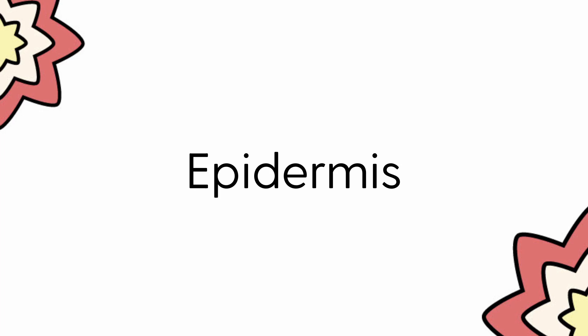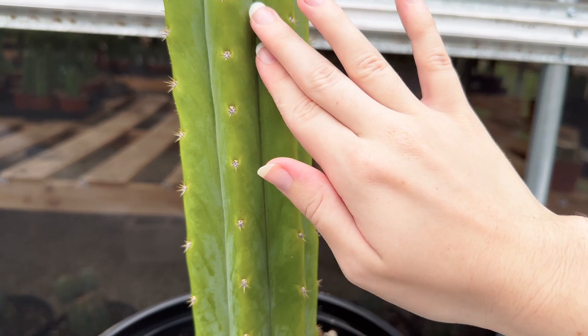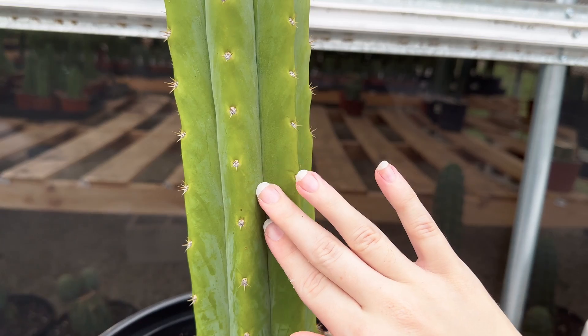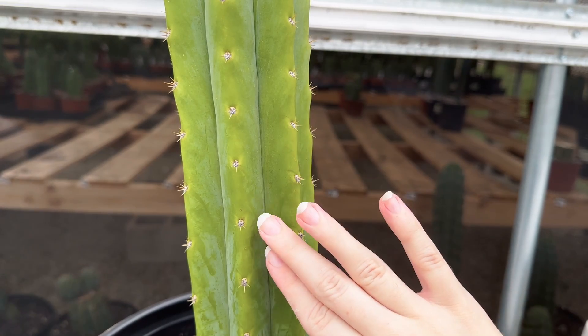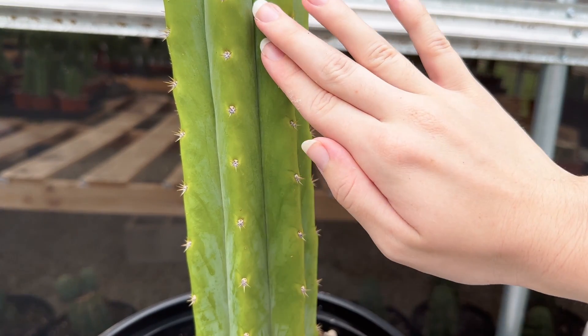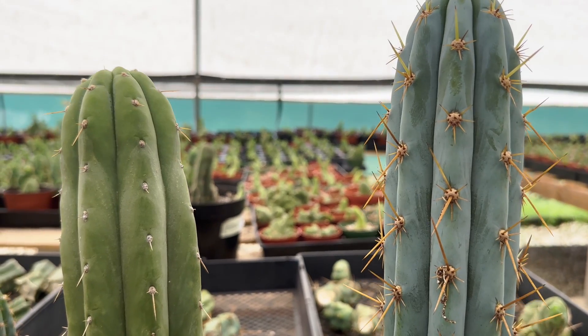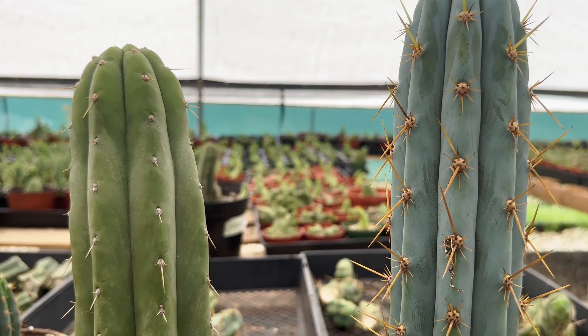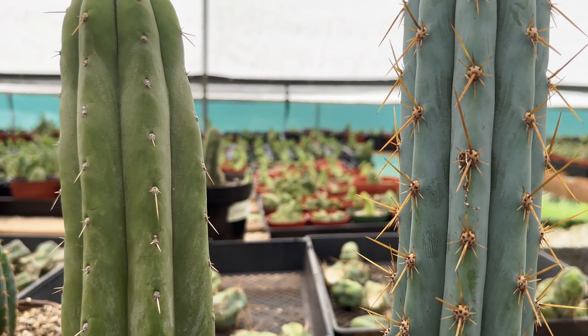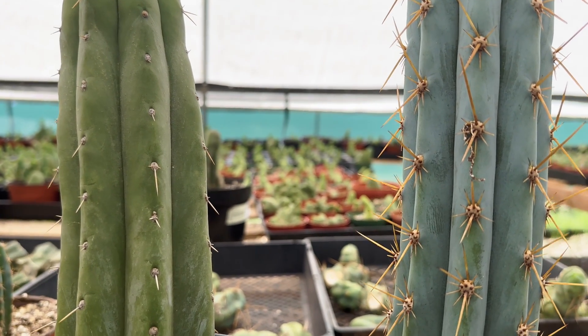The epidermis is the protective outer skin, coated with a waxy shield to guard against harsh sunlight and prevent water loss. Predominant San Pedros have a bright green epidermis, but other varieties like the Peruvian torch have a paler blue color to them.